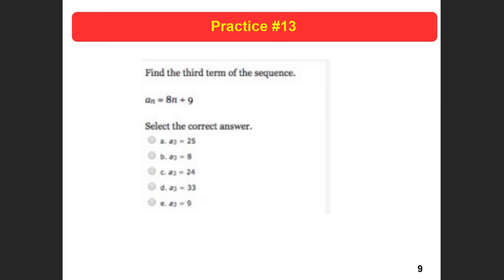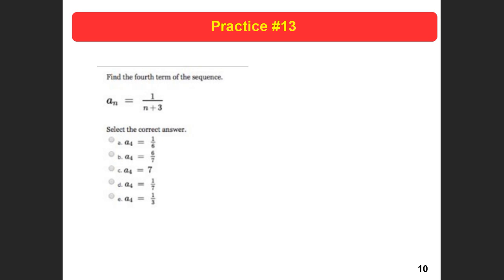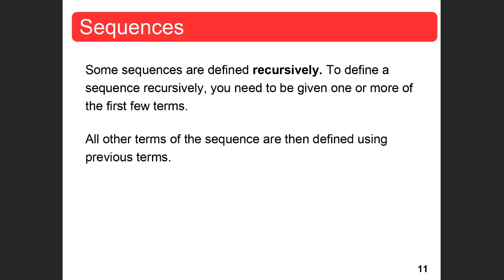Find the third term of the sequence: put 3 in there — 8 times 3 is 24, plus 9 is 33. That was a pretty easy practice problem. Find the fourth term of the sequence: if I put 4 in, that gives me 1/7. These types are called explicit formulas. Now we're going to talk about recursively defined sequences.